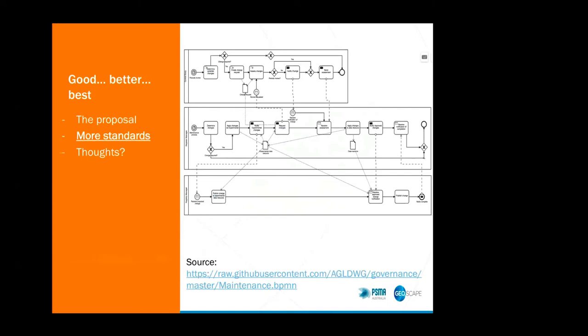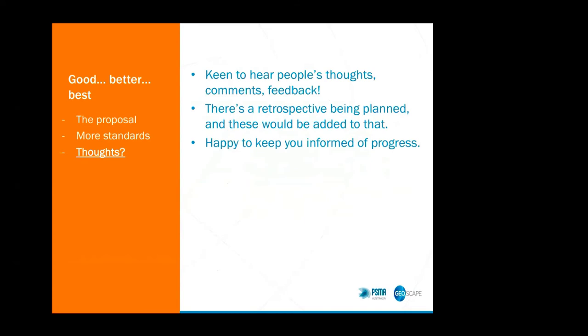The GNAF contributors will become the first submitting organizations. The business process allows for the resource to be live and still have solid governance. This is done by effectively having an experimental data resource that we manage statuses according to ISO 19135 statuses. I've added the proposed governance process to the Australian Government Linked Data Working Group GitHub repository — I've included the link below. If anyone wants to have a look at that, you can click on that link. I'm keen to hear people's thoughts, comments, and feedback on that.